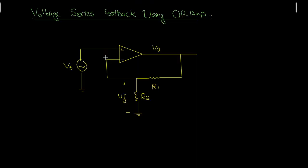The next circuit is the voltage series feedback using the operational amplifier. This is actually a non-inverting amplifier because the input signal is applied to the positive terminal of the op-amp, that is the non-inverting terminal. The feedback signal is Vf, and because this is ground, Vf is over here.